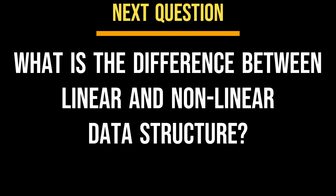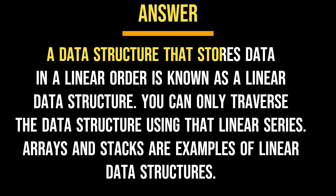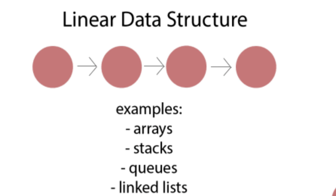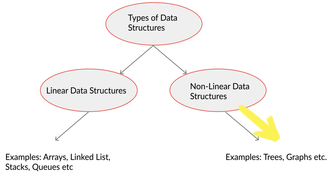What is the difference between linear and non-linear data structures? A data structure that stores data in a linear order is known as a linear data structure. You can only traverse the data structure using that linear series. Arrays and stacks are examples of linear data structures. Data is organized in non-linear ways with non-linear data structures — for example, a graph is made up of nodes connected by edges. The edges that connect the nodes, not the order in which they are joined, determine the relationships between the data values. Trees are examples of non-linear data structures.